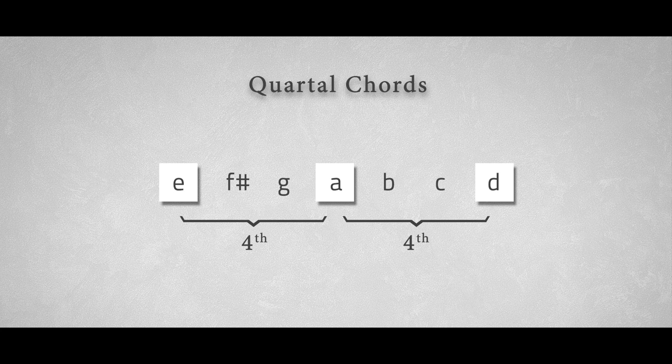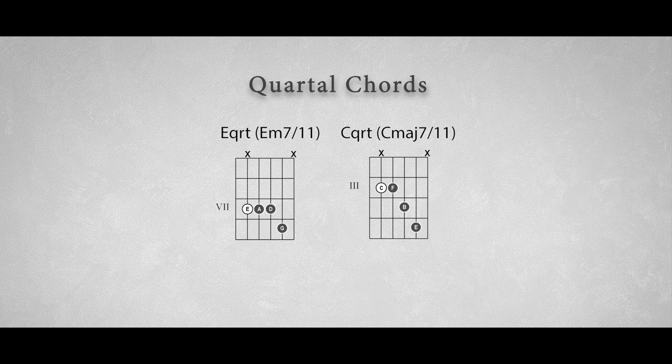Now traditional triad chords and extensions are built with major and minor thirds. Quartal chords however are built by stacking fourths instead of thirds, and this creates some awesome and ambiguous sounds that are typically used in jazz and fusion rock.